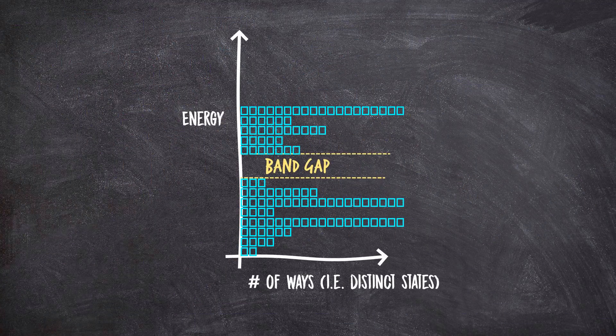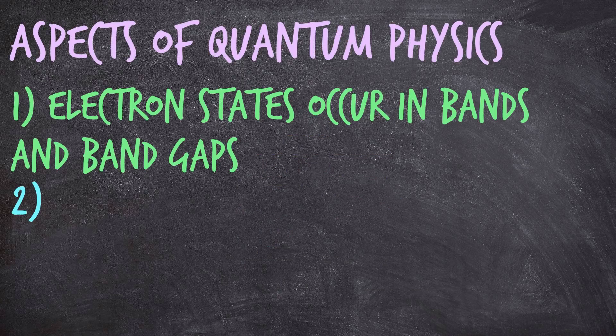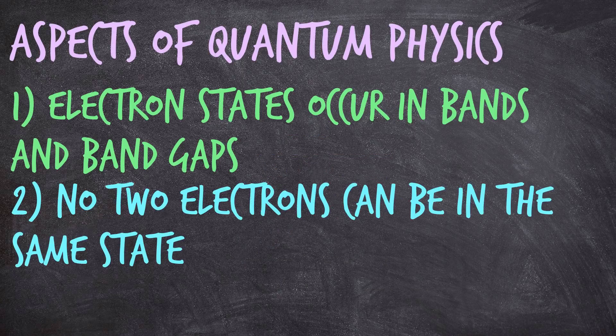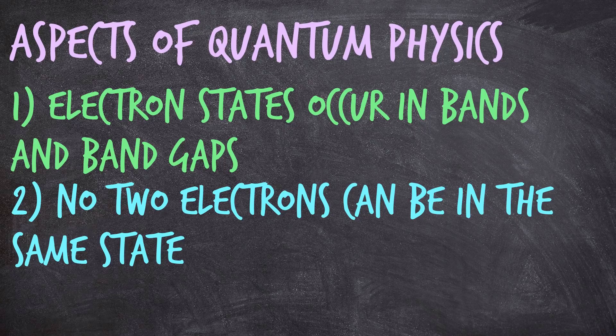However, for today's purposes of understanding, I am actually going to simplify and draw my density of states graphs as if they're actually only a handful of distinct states of each energy. But just don't get confused if you Google density of states and find graphs that look like this and not this. And it's actually very important to know how many states there are at each energy, and that's because of our second key property of quantum physics. No two electrons can ever be in the same state.